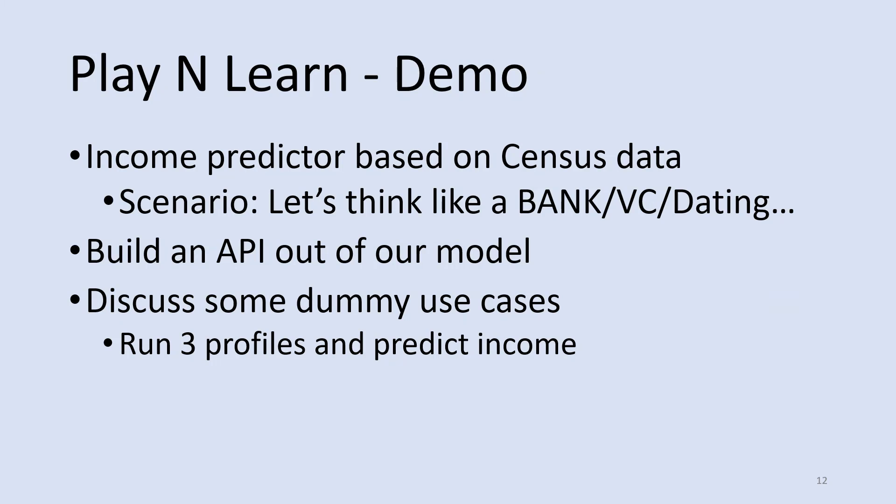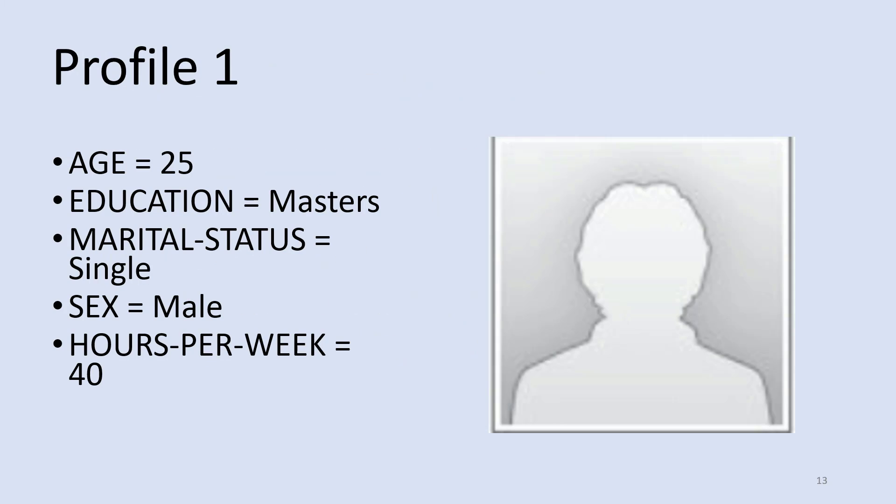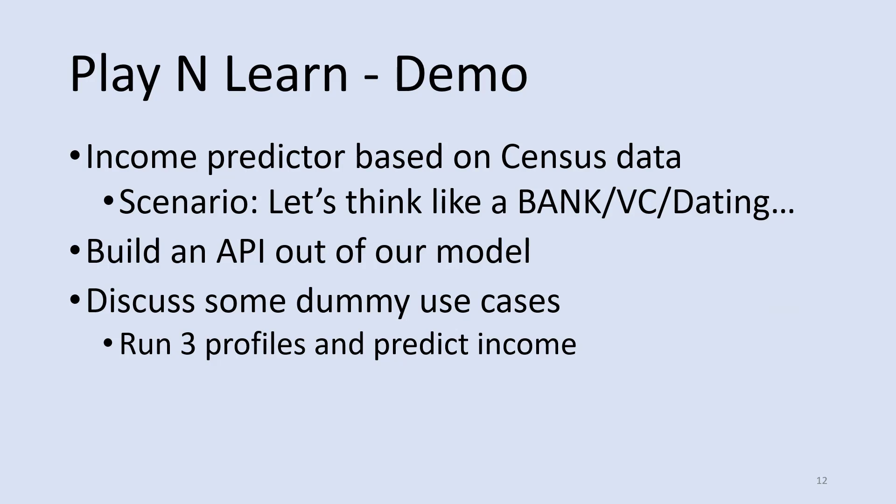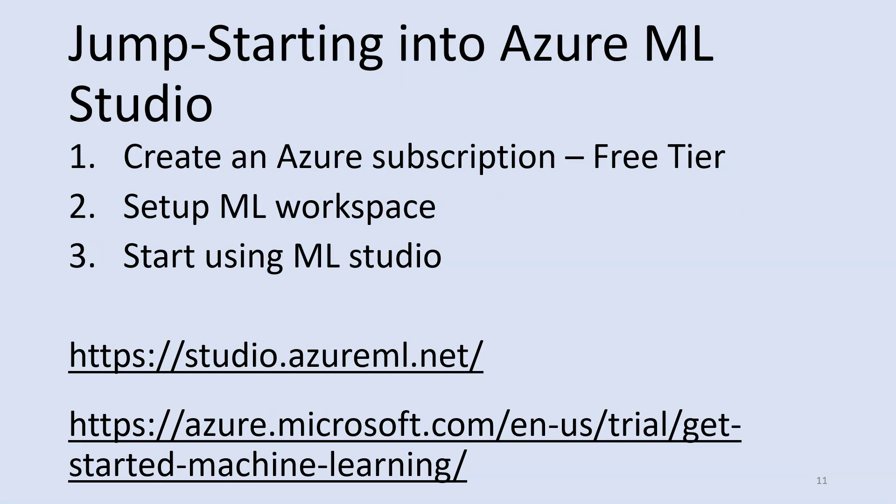We'll run some dummy use cases — I'll probably use Sam's name for one of them and Bert for another. We'll see if they make less than 50 grand or more than 50 grand. This data is from a census which is old, so they only had less than 50 or more than 50. This is what I get for using sample data. Alright, let's get started.